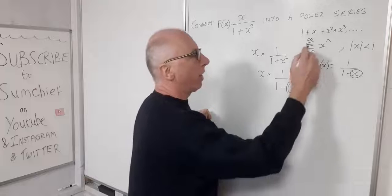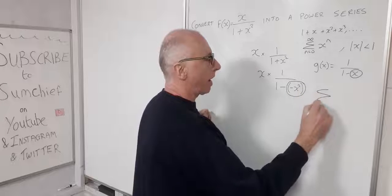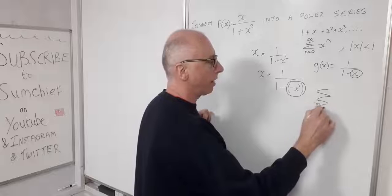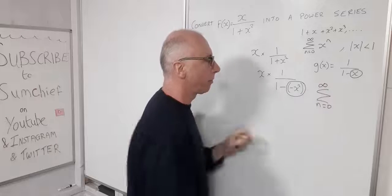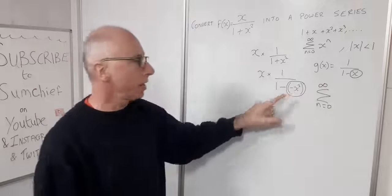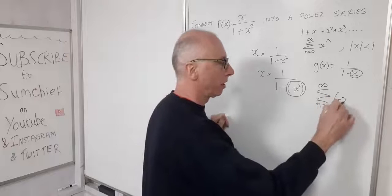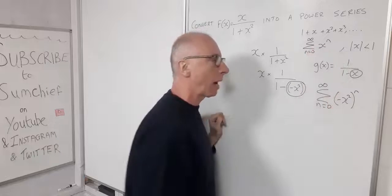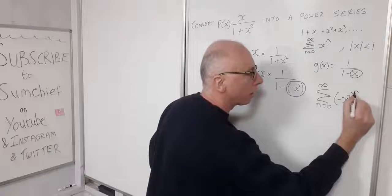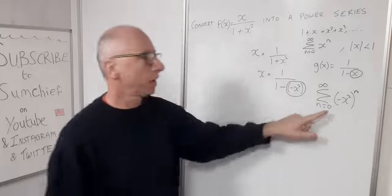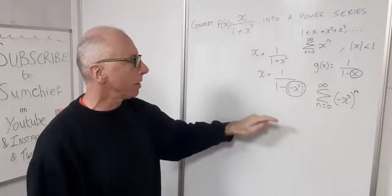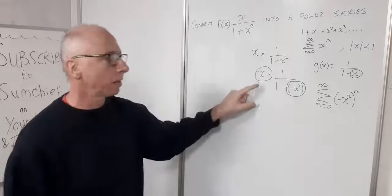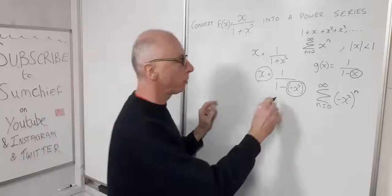So now we can write this part as a power series. Just focusing on the 1 over 1 minus minus x squared portion, we have the sum from n equals 0 to infinity of minus x squared raised to the power of n. We haven't dealt with the x out front yet — we'll come to that in a moment.